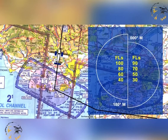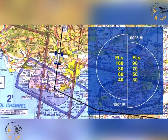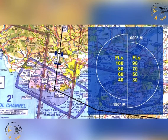However, the semi-circular rule does apply in the United Kingdom to IFR traffic above the transition altitude in controlled airspace, unless air traffic control instructs otherwise. In the JAA ATPL air law examination, you will be tested on the ICAO rule only.